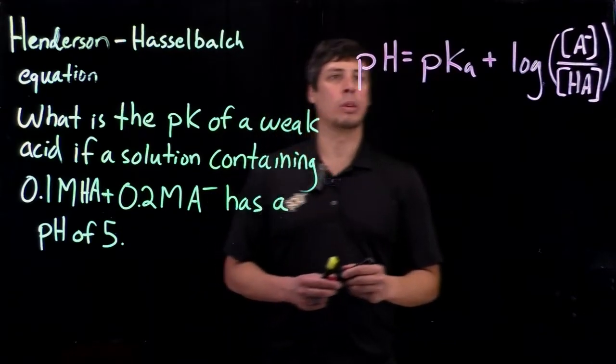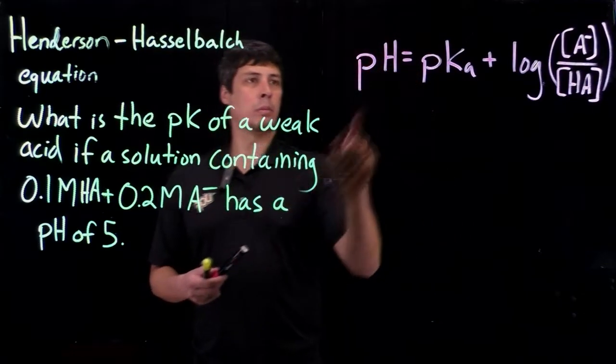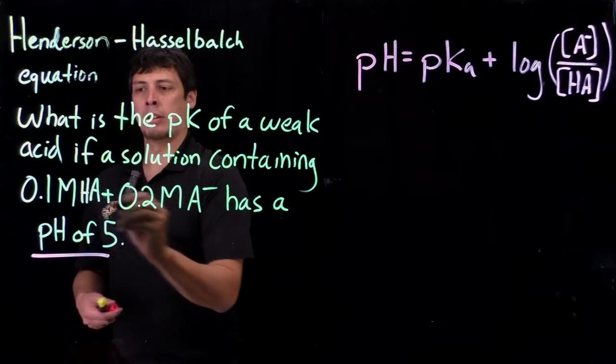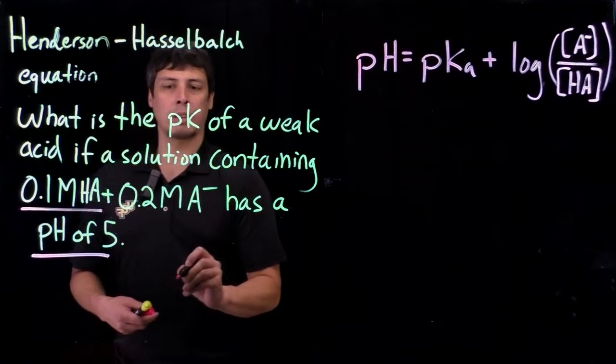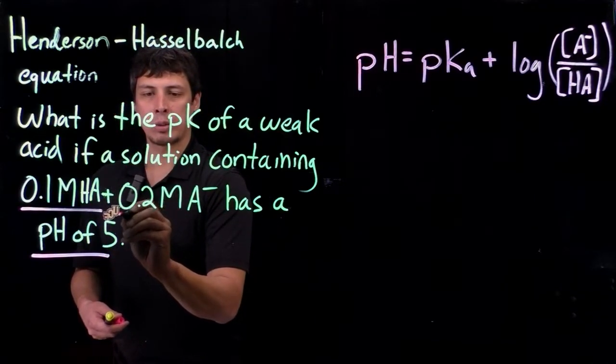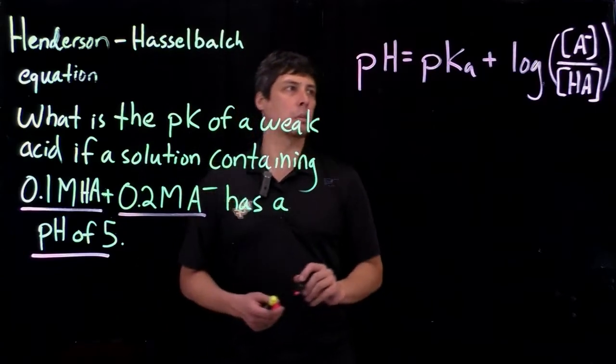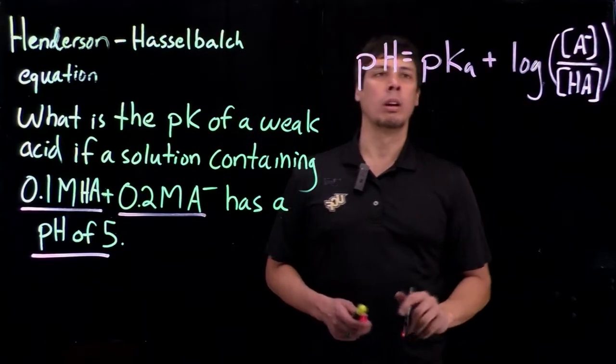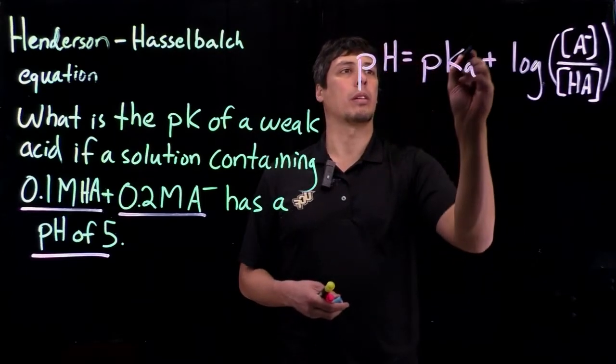Okay, so we need pH, we have a pH of 5. We have 0.1 molar of the acid in solution and 0.2 molar of the conjugate base. So we have 1, 2, 3 parameters out of 4 and we're going to solve for K.